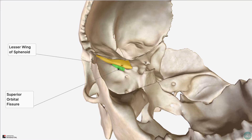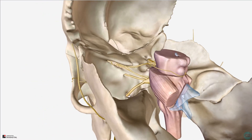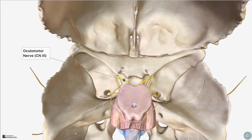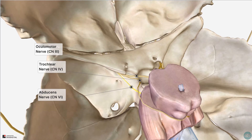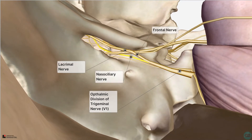This fissure lies between the greater and lesser wings of the sphenoid, and opens into the orbit. The superior orbital fissure transmits the remaining cranial nerves associated with the eye. The optic nerve passed into the optic canals, so the remaining cranial nerves are the oculomotor, trochlear, abducens, and the ophthalmic division of the trigeminal nerve — specifically the lacrimal, frontal, and nasociliary branches. In addition, the ophthalmic veins and sympathetic fibres from the cavernous plexus pass through.